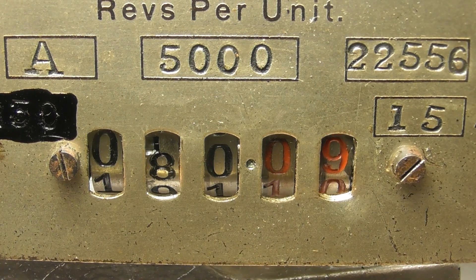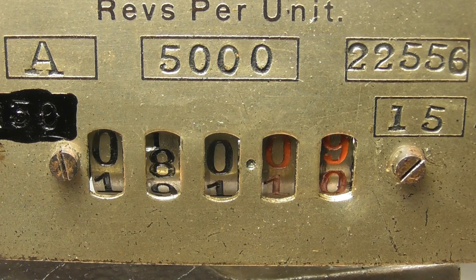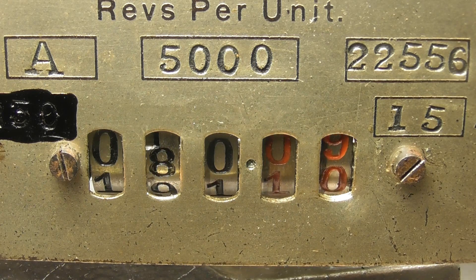I missed it. I missed the rollover to 80.00. The meter is at 5000 revolutions per unit.